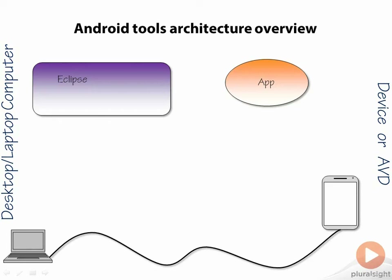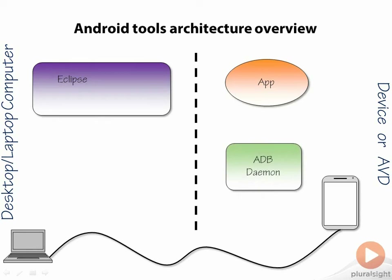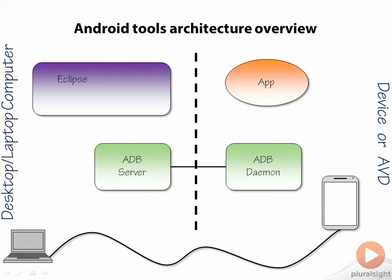Because we're talking about a physically separated environment, there's something called the Android Debug Bridge, or ADB. There's an ADB daemon running on the device — a daemon is just a background process. On your desktop, you have an ADB server, which is responsible for managing communication between the devices. Pretty much everything from a development standpoint walks through that bridge.